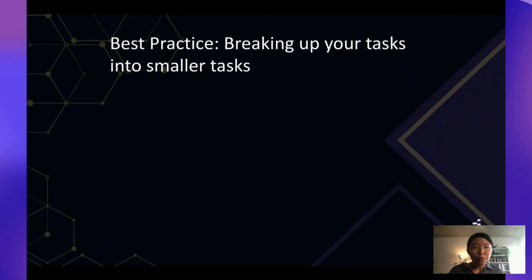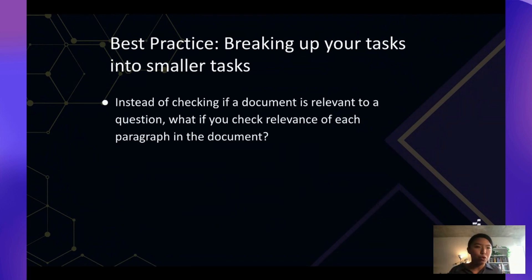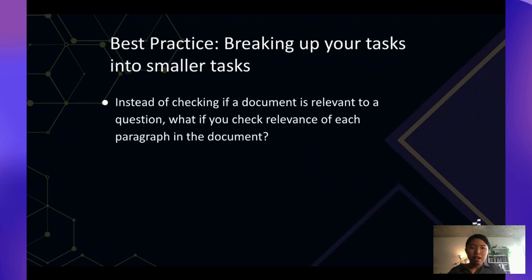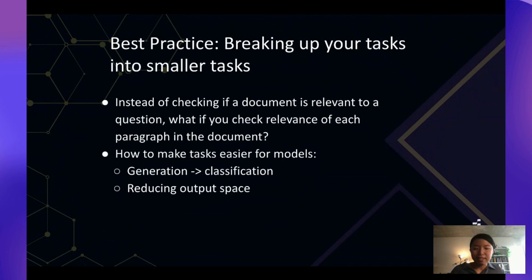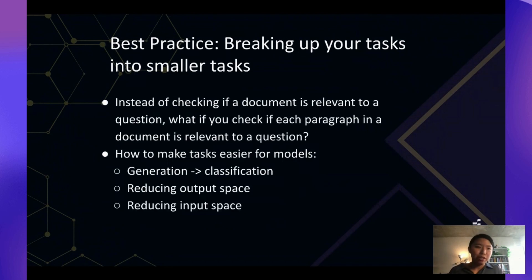One helpful approach is to break up tasks into smaller tasks. For example, in an information retrieval product, instead of finding a relevant document all at once, do it paragraph by paragraph and then aggregate results. Generally — and this is a generalization — classification is easier than generation. Reducing the output space helps: a thousand classes is harder to learn than ten. Reducing input space variability also helps.